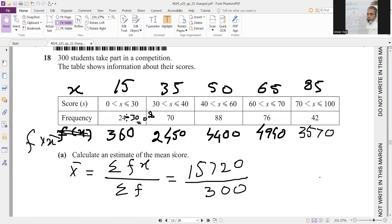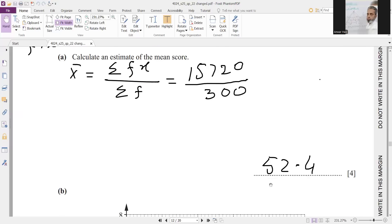Then you will get fx. fx equals multiply this 15 by 24, so you will get 360. Similarly all these. x bar equals summation, this is sigma. Sigma stands for sum. Sum of fx over sum of frequency. So when you will add these all using calculator, you will get 15,720 divided by 300, and your answer will be 52.4.